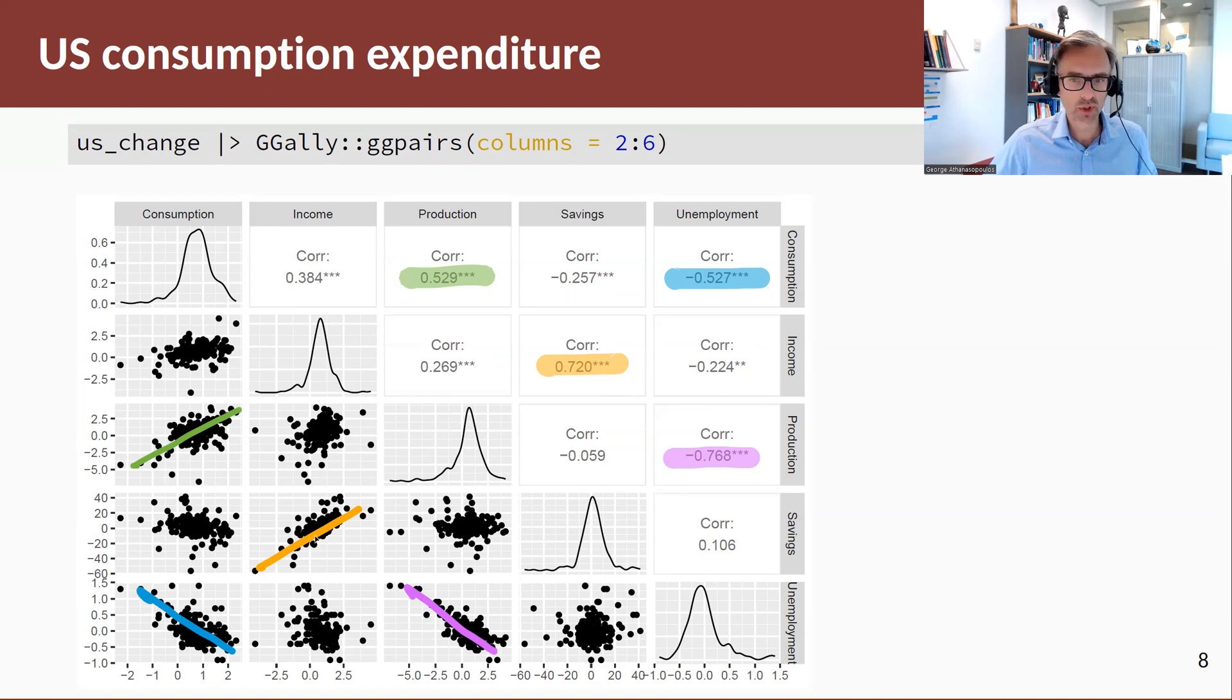And then we have a couple of negative strong correlations. So consumption and unemployment, as unemployment increases, consumption decreases, so there's a strong negative relationship with a correlation coefficient of minus 0.527. Also a negative correlation between production and unemployment. As unemployment increases or as production decreases, we're not talking about causation here, we're just looking at the relation between these two. There's a negative relation between the two variables. As production increases, unemployment decreases and vice versa.